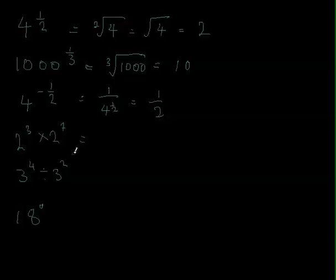This one is very easy. So 2 to the power of 3 times 2 to the power of 7 is just going to be 2 to the power of 10. 3 to the power of 4 divided by 3 to the power of 2 is going to be 4 take away 2, so 3 to the power of 2, which we can write as 9. This one is 18 to the power of 0. We know anything to the power of 0 is going to be 1.